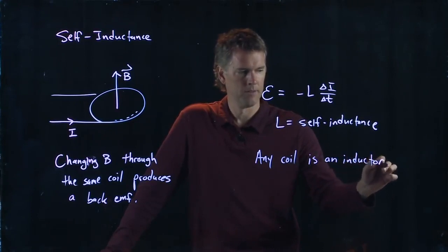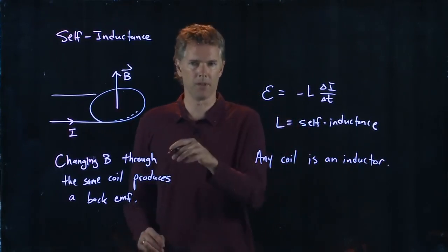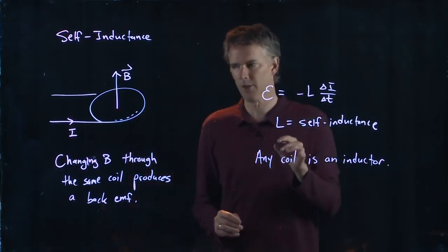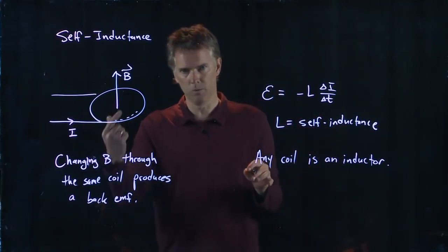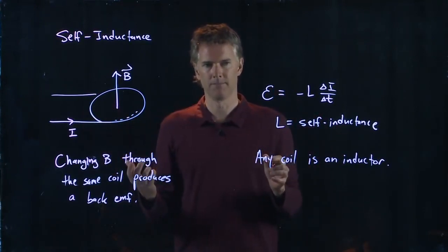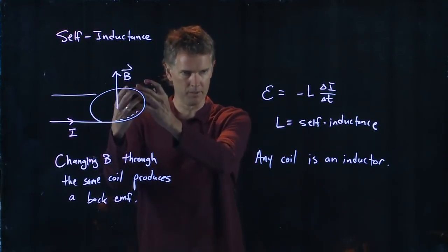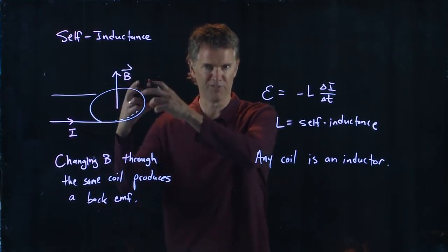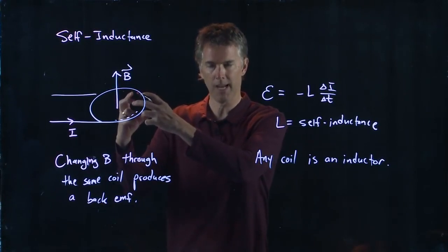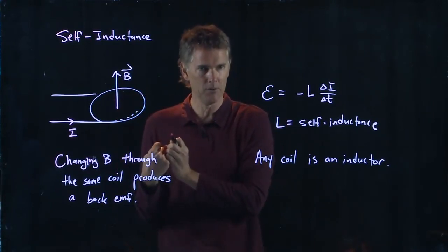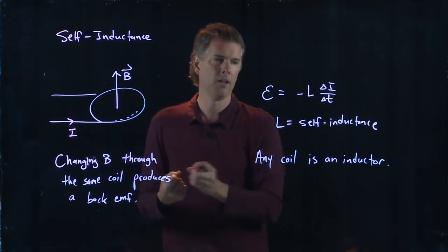Inductors are something that you've probably played around with already in the lab. Any coil loop is an inductor, meaning if you try to run current through it, it's going to generate a B field. The loop itself doesn't like that changing B field, and so it's going to fight back against you with this back EMF.